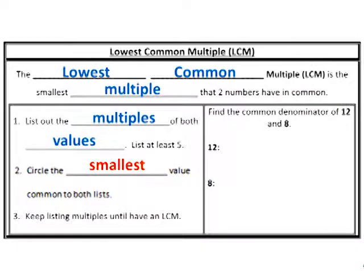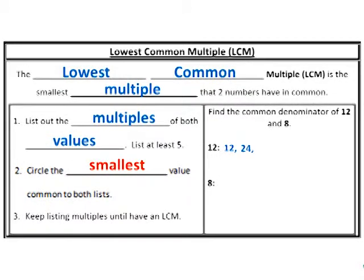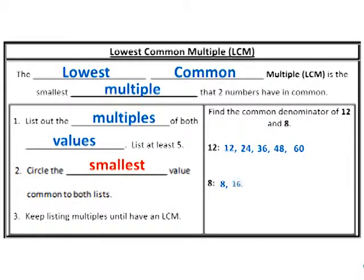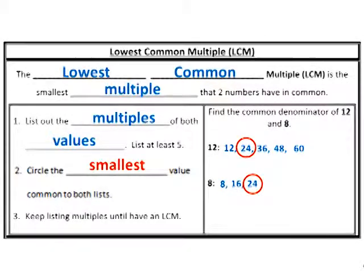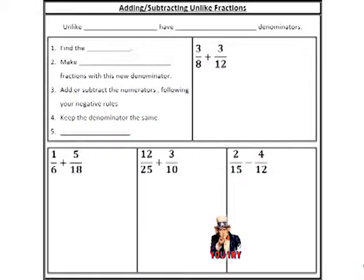So let's try twelve first. Twelve times one is twelve. Twelve times two is twenty-four. Twelve times three is thirty-six. Twelve times four is forty-eight. Twelve times five is sixty. Then we do our eights. Eight times one is eight. Eight times two is sixteen. Eight times three is twenty-four. I see a number that's in common already in both lists — in this case, twenty-four. I don't have to list out five if I notice it. If the goal is to find the smallest number in common, don't keep looking after you've found it.